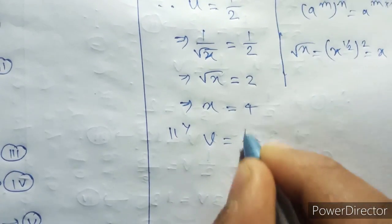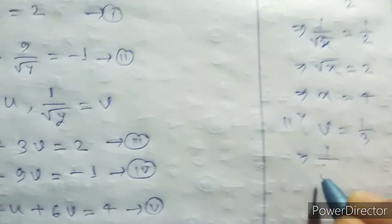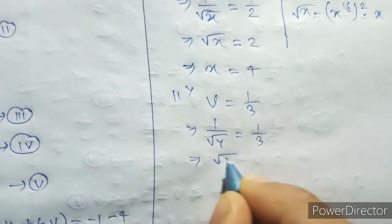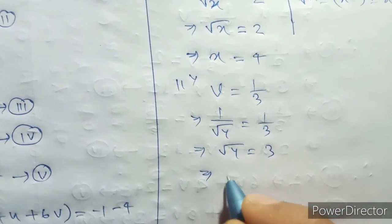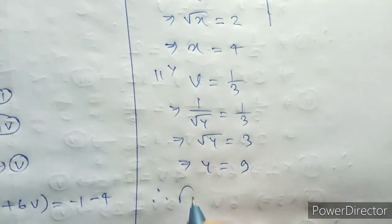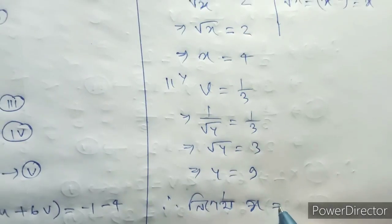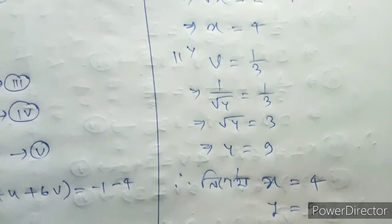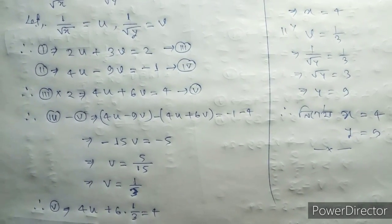V equal to 1 by 3. We had V equal to 1 by root of Y, so root of Y equal to 3. Squaring, Y equal to 9. So the answer is X equal to 4, Y equal to 9.